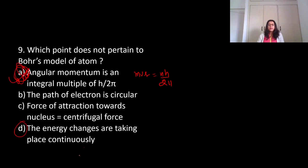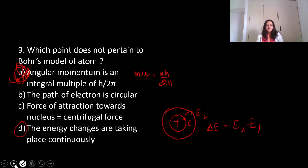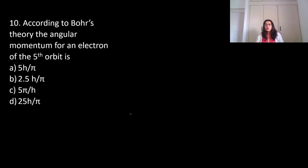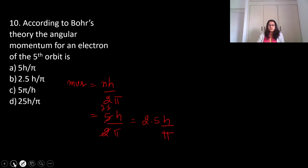According to Bohr's theory, the angular momentum of an electron in the fifth orbit: mvr equals nh upon 2 pi. n is 5, so it's 5h upon 2 pi, which equals 2.5 h upon pi. That is going to be your answer.